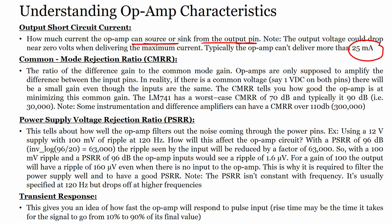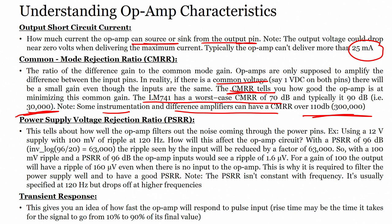Common mode rejection ratio — the ratio of differential gain to common mode gain, AD divided by ACM. Op-amps are only supposed to amplify the difference of the inputs, not the common mode signal. In reality, there is a small common mode gain. The CMRR tells how well the op-amp minimizes this. The LM741 has a worst case CMRR of 70 dB and typically 90 dB, which is 30,000. Some instrumentation and difference amplifiers achieve CMRR over 300,000. A high CMRR means output is close to AD × VD.